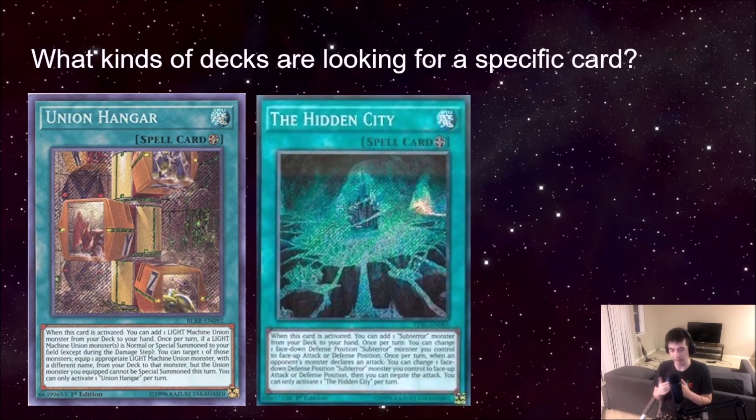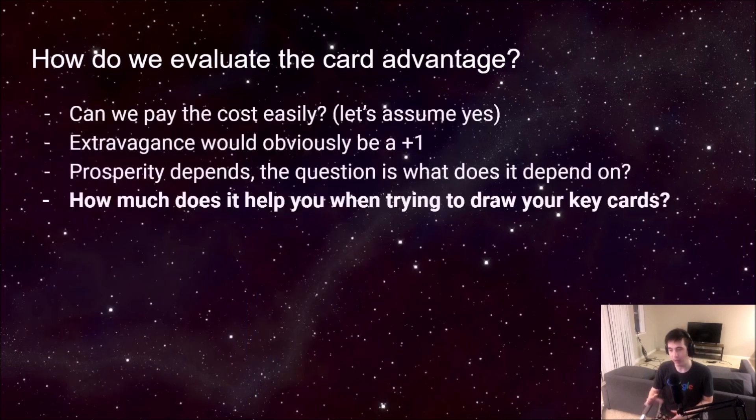So how much is that excavate 6 worth to you? What kinds of decks are looking for specific cards? One great example is a deck like ABC, which uses Union Hangar. It's literally like a plus four if you're able to draw it. Decks that are looking for specific cards or specific combo pieces may be interested in playing Pot of Prosperity. If your deck doesn't have that much synergy together and you're looking for a raw amount of cards, then obviously Pot of Desires or Pot of Extravagance may be the better fit for you.